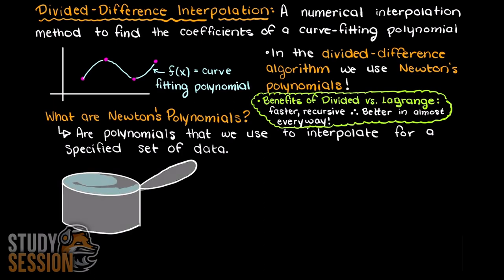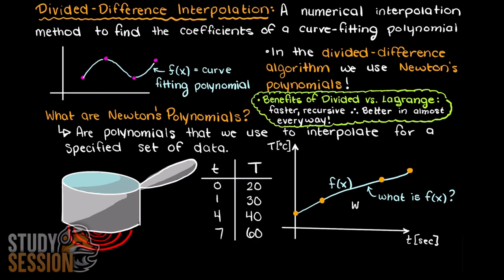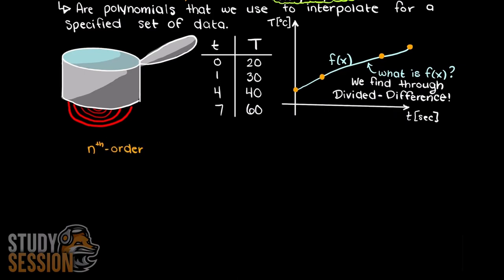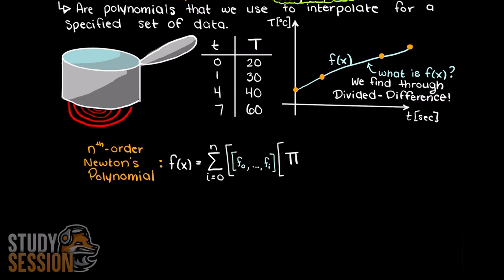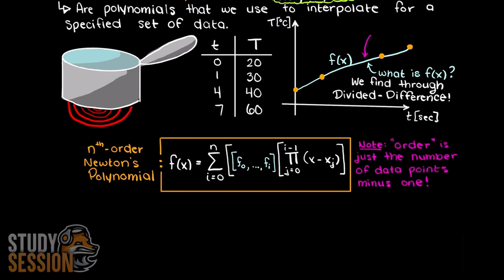Back to talking about the divided difference method — let's imagine we have a pot of water being heated slowly on a stove where we are tracking the temperature increase at different points in time, giving us discrete data points. Graphically, this data set will look something like this. Then we are going to use the divided difference algorithm to find a continuous function using Newton's polynomials that pass through all of the points. The general formula for an nth order Newton's polynomial is written here, where n is our order — simply the number of data points minus 1.